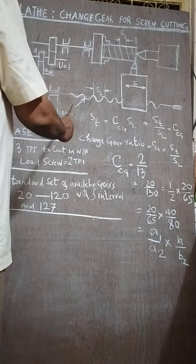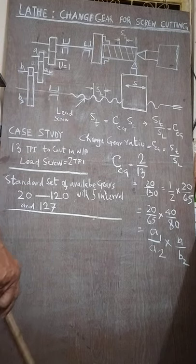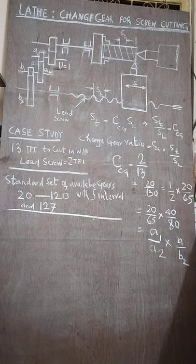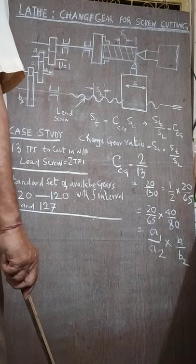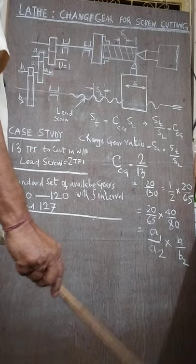And these lead screws are of square thread or acme thread. Very precision screw is there, otherwise if the precision is not achieved in the lead screw, the screw cutting will not be as accurate as we desire.